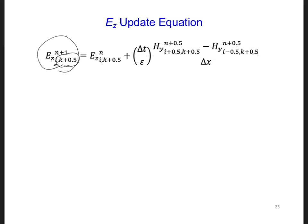Spend a minute now going through the same process to develop an update equation for the second equation we obtained from Ampere's law. This is for the x component. So we have minus dH_y/dz equals epsilon dE_x/dt.